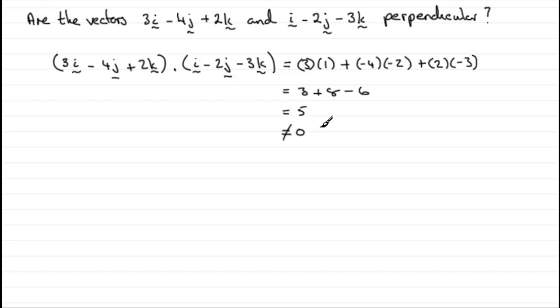So therefore, our two vectors are not perpendicular. So the conclusion is, therefore, not perpendicular. OK, well, that's one example. Here's another one.